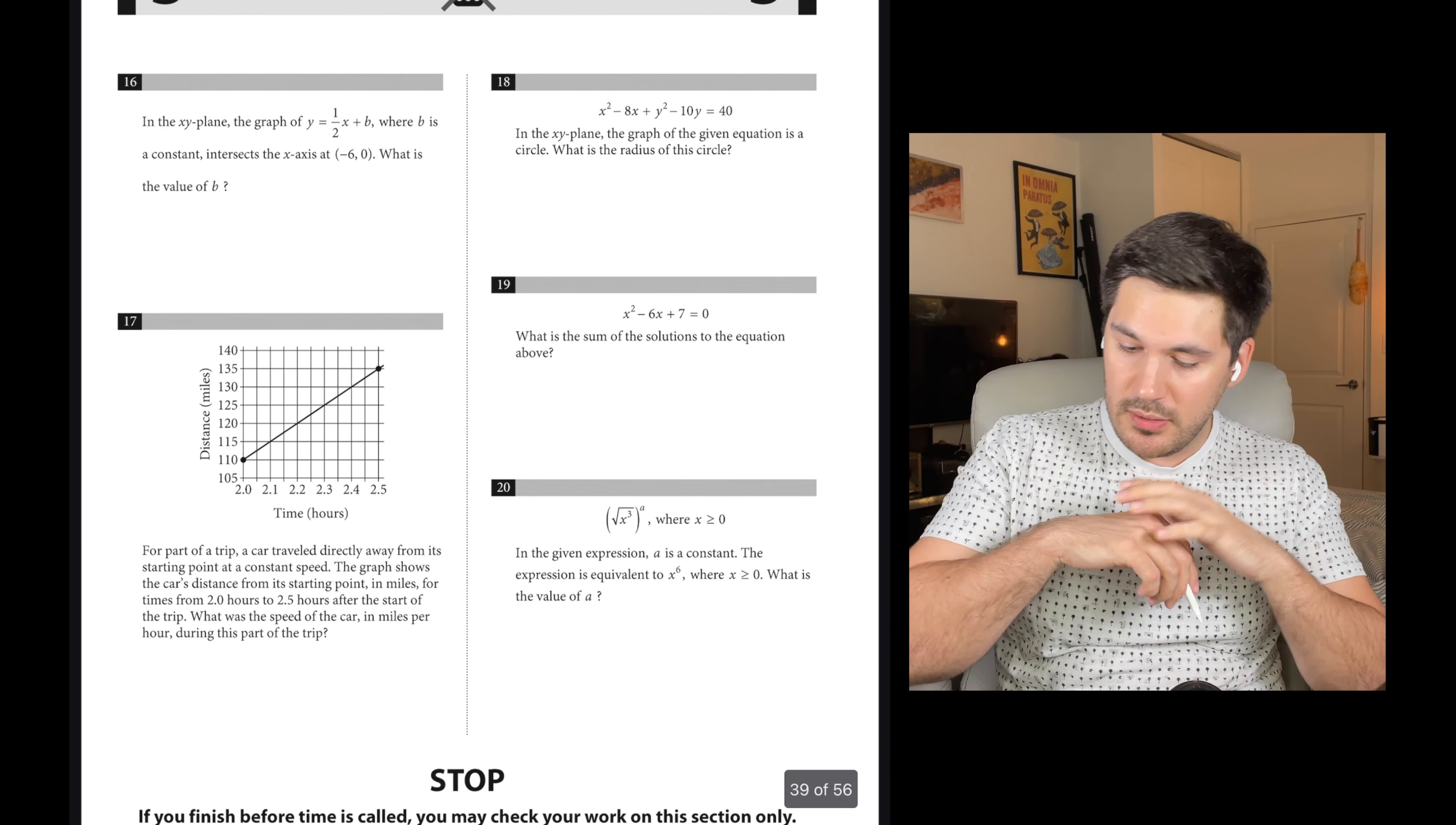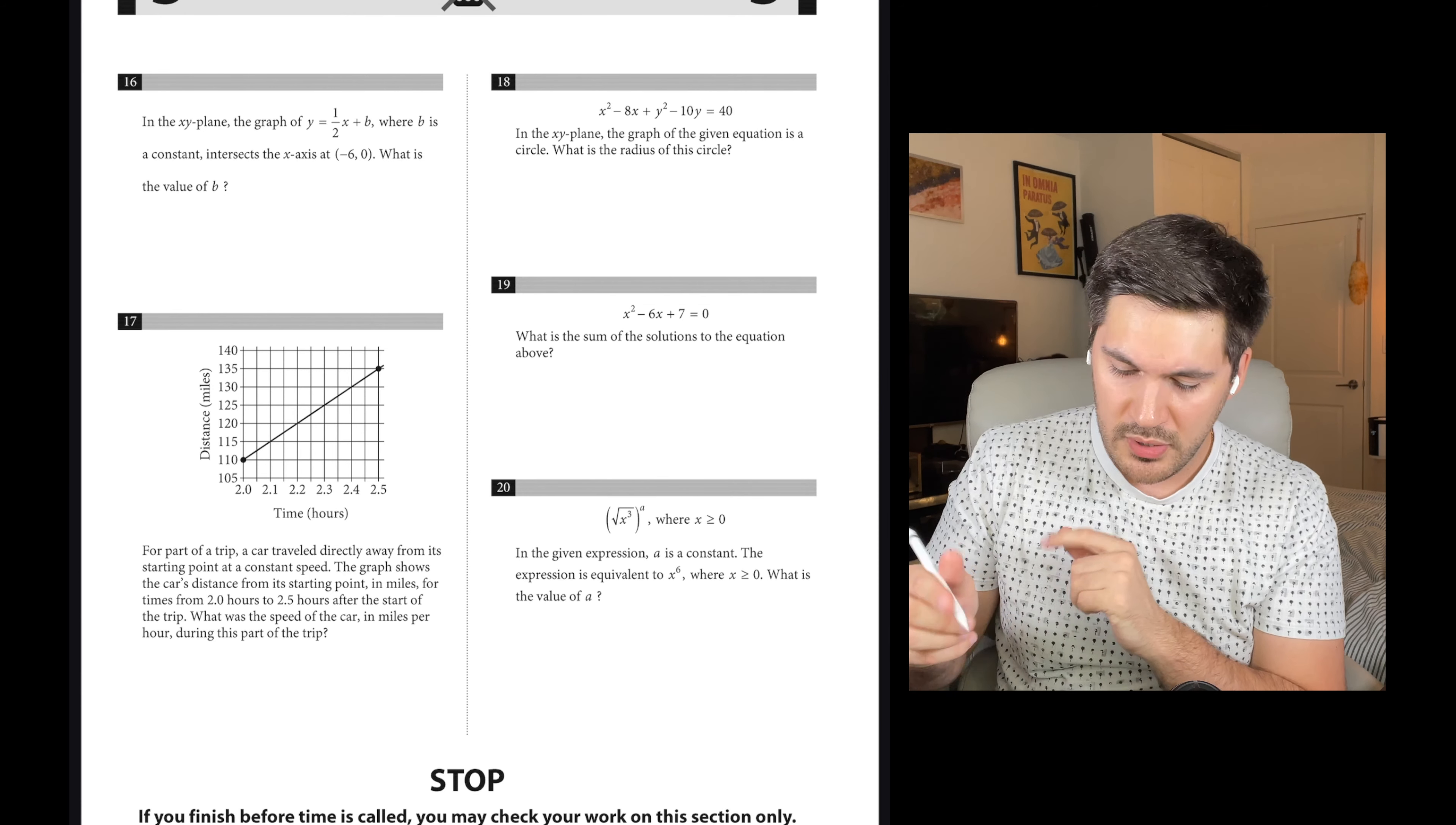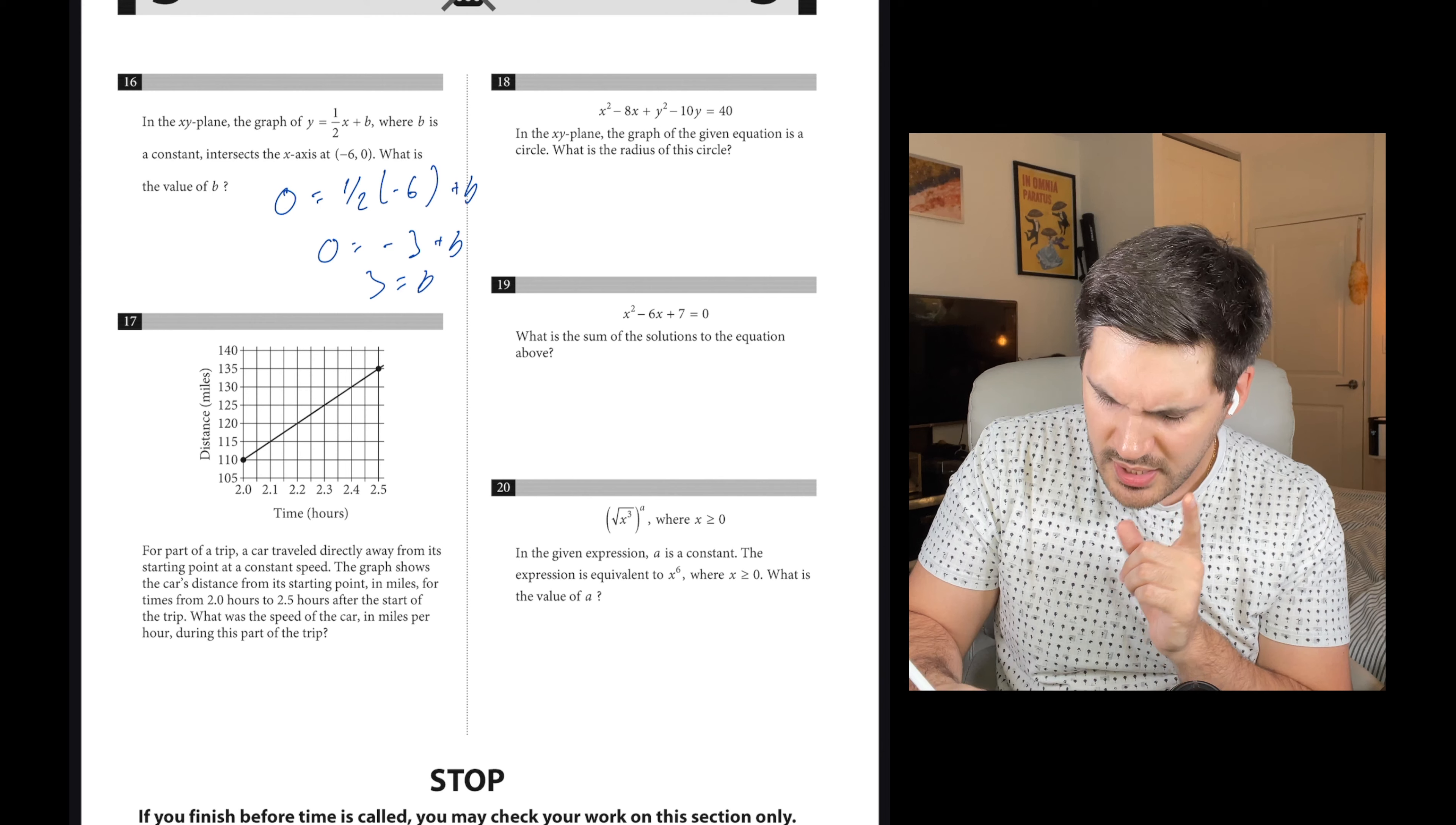Number 16. In the xy-plane, the graph of y equals one half x plus b, where b is a constant, intersects the x-axis at (-6, 0). What is the value of b? They give us a point and an equation. Plug the point into the equation. Zero equals one half times negative 6 plus b. So zero equals negative 3 plus b. So b equals 3. Easy peasy.